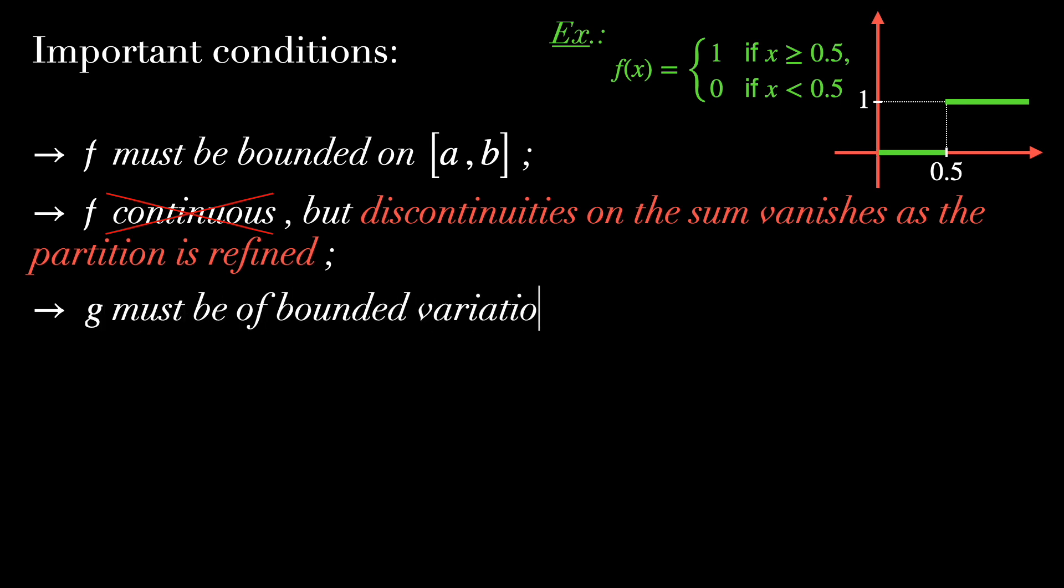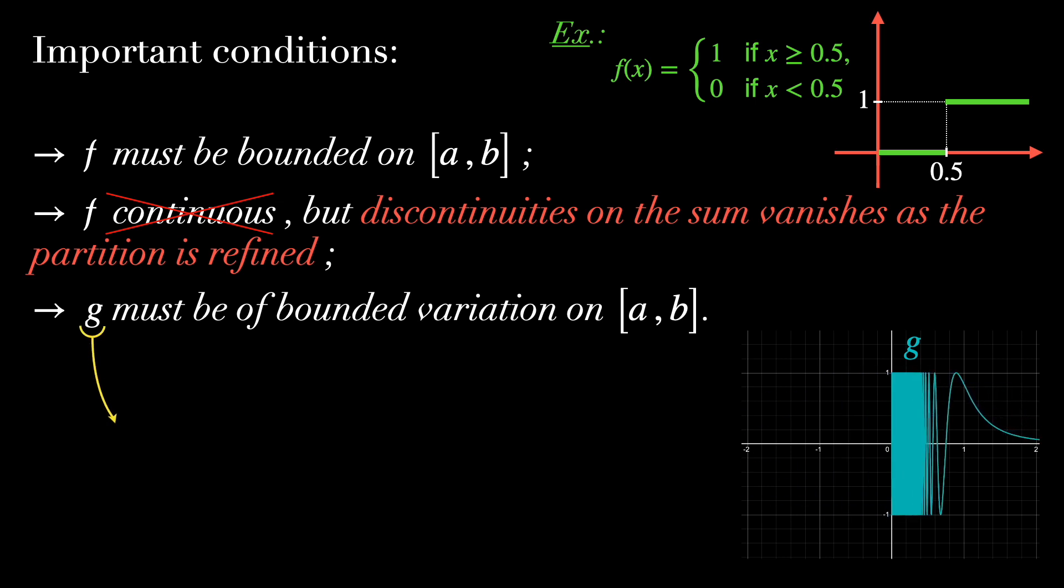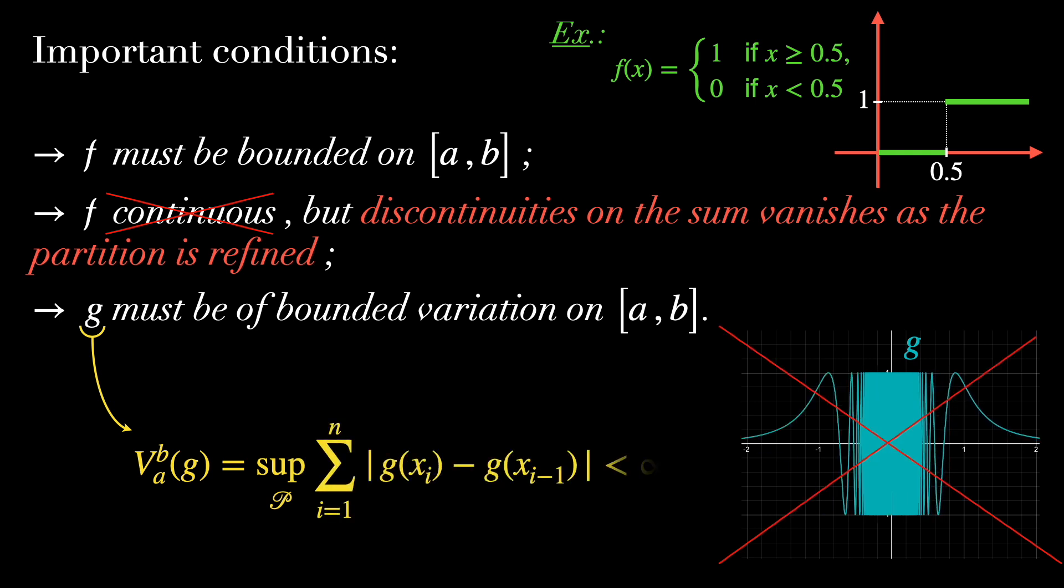g must be of bounded variation on [a,b]. This condition ensures that the function g doesn't oscillate too wildly. A function is of bounded variation if the total variation of g, which is defined as the supremum of the sum of the absolute differences, is finite over the interval [a,b].